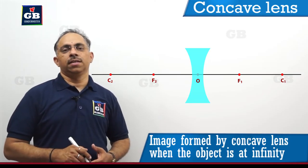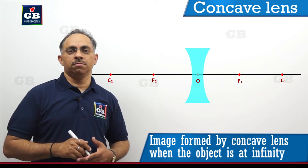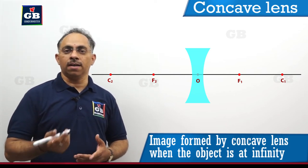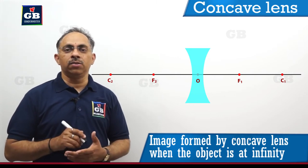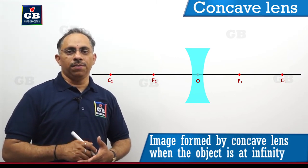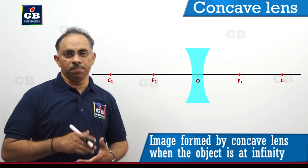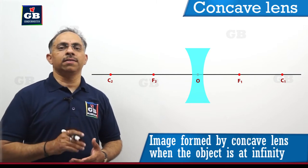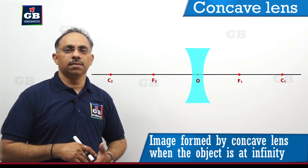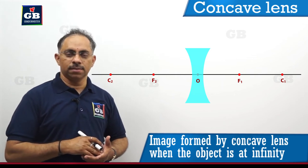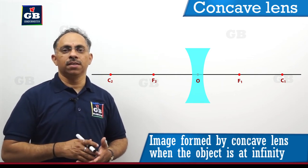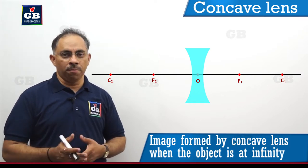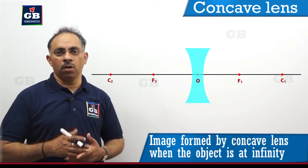When we want to construct the position of an image using ray diagrams, either for a concave lens or a convex lens, we need to understand: first, the position of the object; second, the focal length of the given lens; and third, the nature of the lens. Based on this information, we can determine the nature of the image formed, where it is formed, and how it is formed.